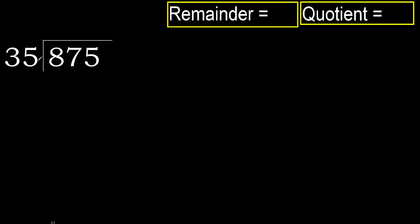875 divided by 35. 8 is less, therefore next. 87 is not less, therefore work with 87. 35 multiplied by which number is nearest to 87, but not greater?